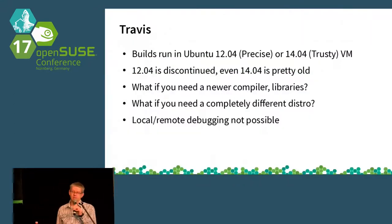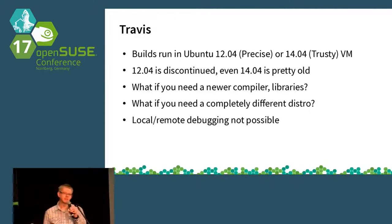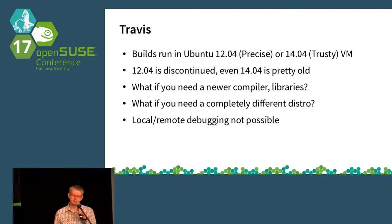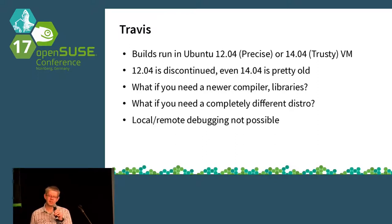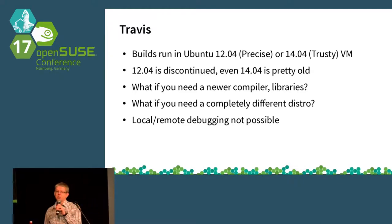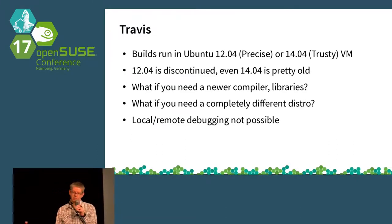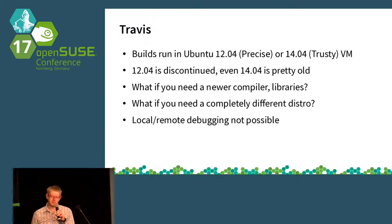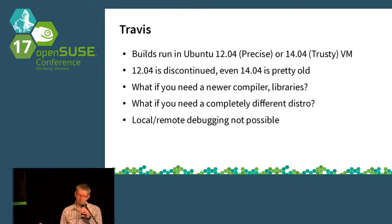Let's talk about some details of Travis builds. The workers are running in Ubuntu virtual machines, either Precise or Trusty, but both of them are pretty old — Precise is actually discontinued and not supported anymore. The question is: what if you need a newer compiler, newer libraries, or a completely different distribution because your software is not meant to run on Ubuntu? Another issue is that you can't easily debug the build — if the build fails, it would be nice to SSH in or reproduce the issue locally, but both are not possible with Travis.